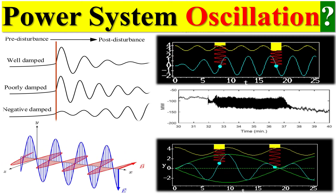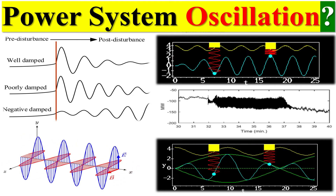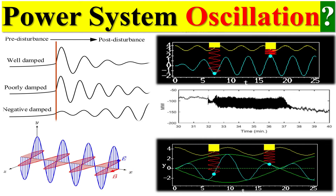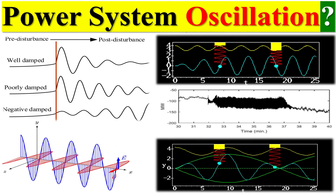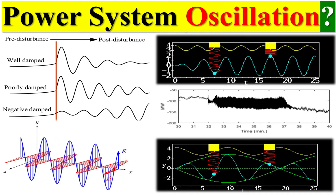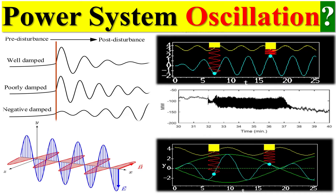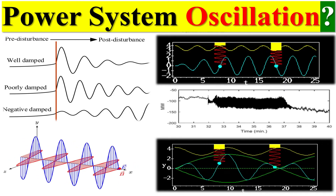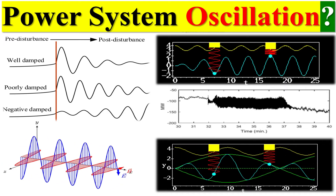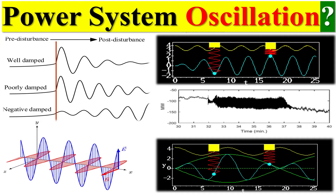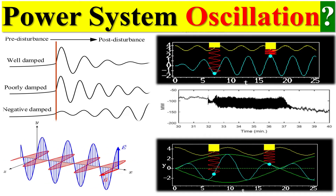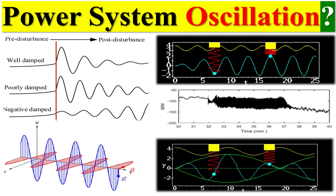In physics, oscillation refers to the repetitive or periodic variation, typically in time, of some measure about a central value — often a point of equilibrium — or between two or more different states. Oscillation is defined as the process of repeating variations of any quantity or measure about its equilibrium value in time.